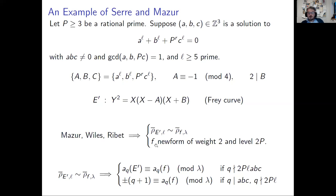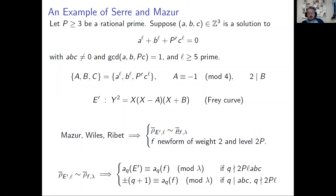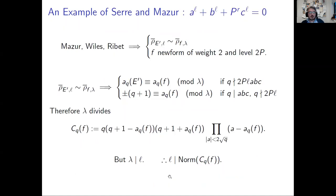To summarize: if I pick a P and look at this equation, a solution is associated to a newform of weight 2 and level 2P. There are only finitely many such newforms. If we were looking at just the Fermat equation, there would be no newforms of weight 2 and level 2, giving a contradiction — that's the end of the proof of Fermat's Last Theorem. But in other cases, you have finitely many newforms, which you can compute using algorithms of Cremona and Stein.